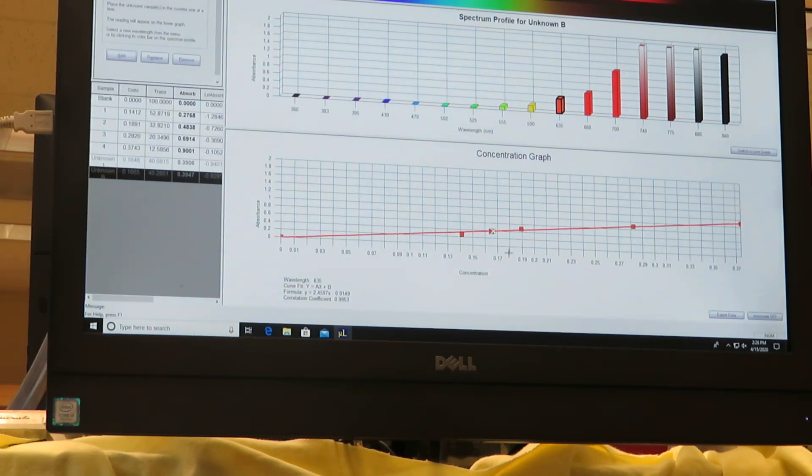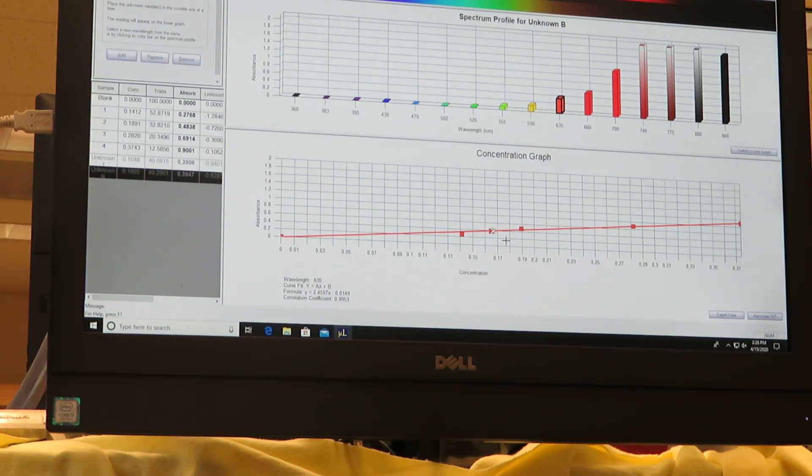You can see the X is very close to the unknown, which it should be because we measured very close to the target mass. Now we can answer some questions on comparing the unknown solutions.